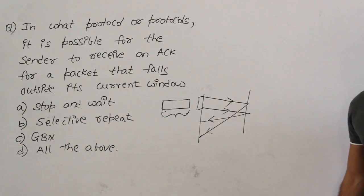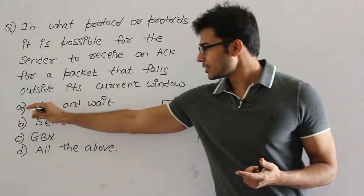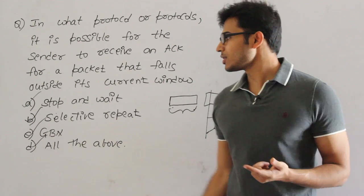Therefore it is unexpected and it can happen in any of the protocols. Delayed acknowledgements can happen in stop and wait as well as selective repeat as well as go back N, therefore answer is all the above.